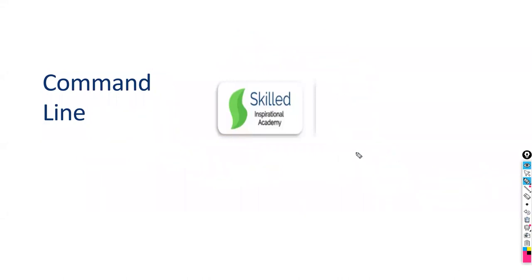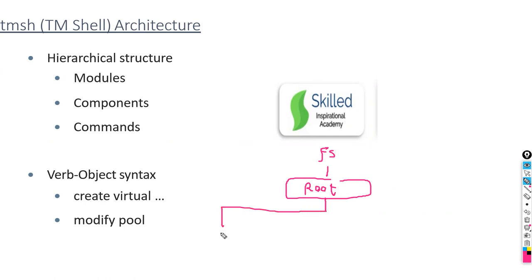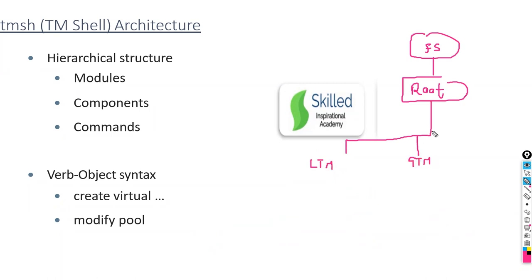Let's go with the tree architecture. When I talk about the CLI part, your F5 starts with your root. After root, it will have your modules — whether it's LTM module, GTM module, ASM module, or any other module called APM. All your Linux shell directory starts with root. After root you will have modules: LTM, GTM, ASM.